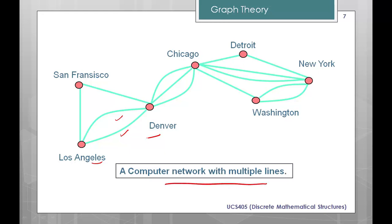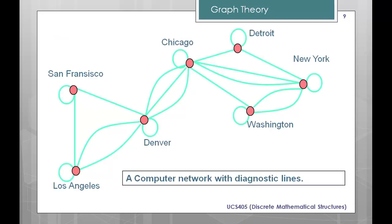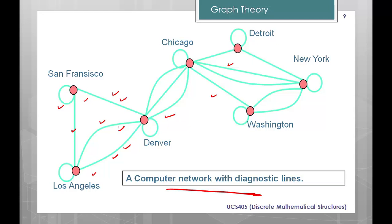The third type is pseudograph. Pseudograph means there is the addition of a self-loop. In the example, the red nodes are the vertices and the green ones are the edges. This graph can contain only one edge between some pairs but also contains multiple edges along with self-loops. If it is the combination of all things — multiple edges and self-loops — then we call it a pseudograph. For example, a computer network with diagnostic links is an example of a pseudograph.